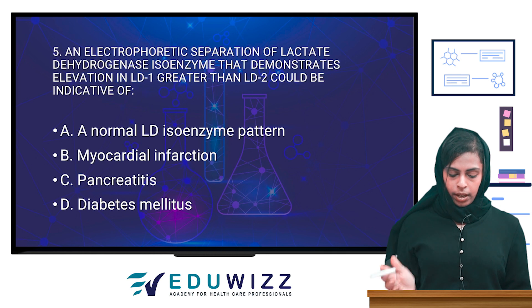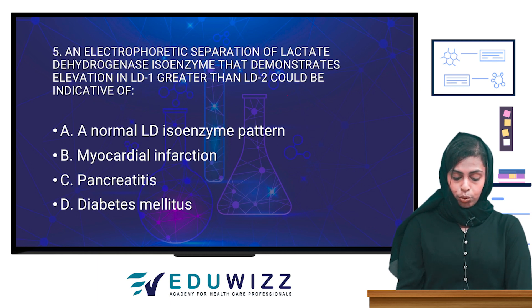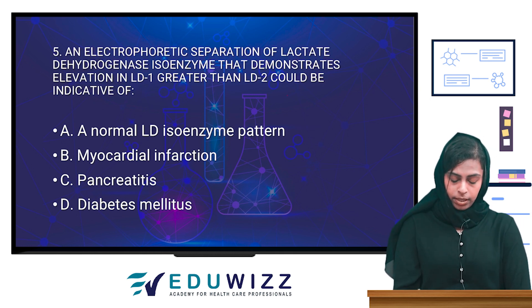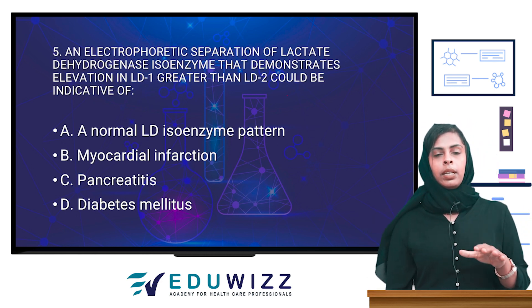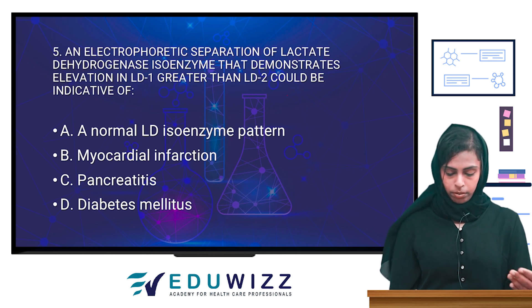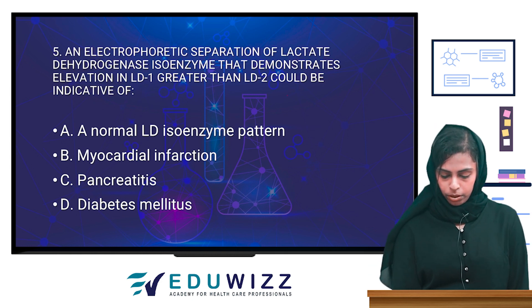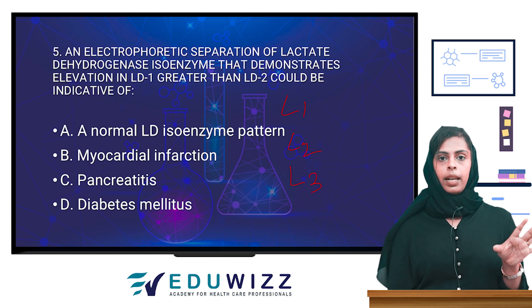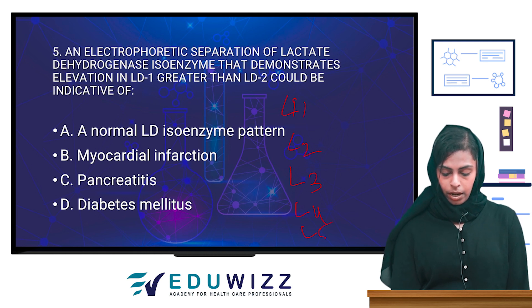An electrophoretic pattern of lactate dehydrogenase isoenzymes demonstrating elevation of LD1 greater than LD2 could indicate: normal LD isoenzyme pattern, myocardial infarction, pancreatitis, or diabetes mellitus. Normally, LD1 greater than LD2 is not a common or normal pattern. There are five LDH isoenzymes: LD1 through LD5. LD1 is seen in heart muscles.